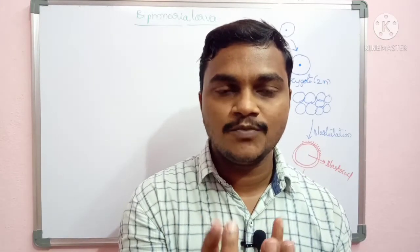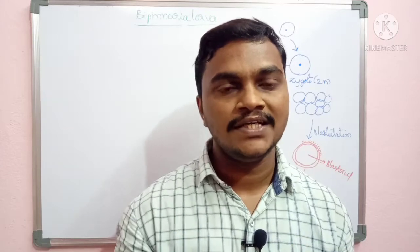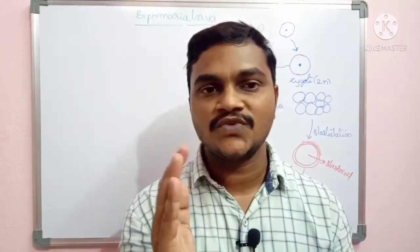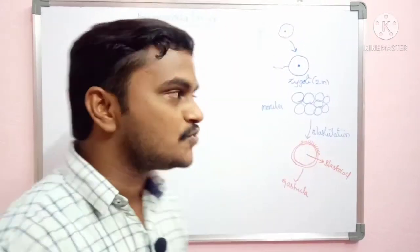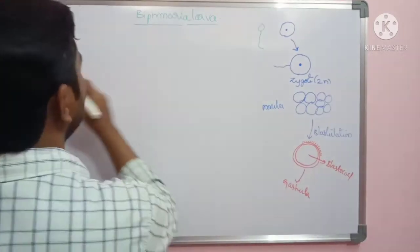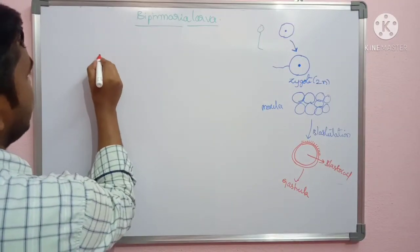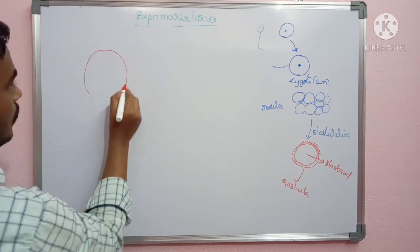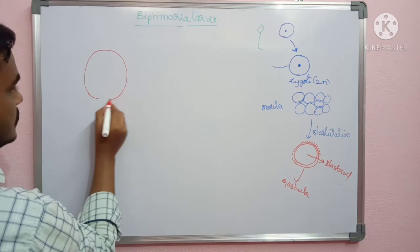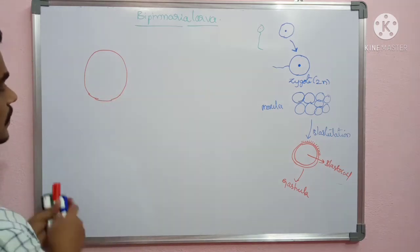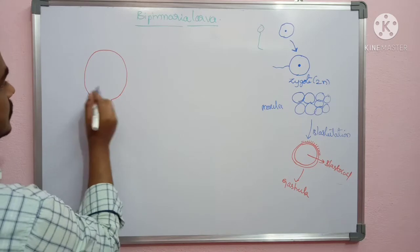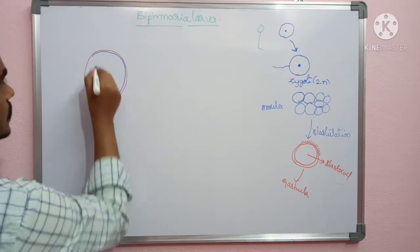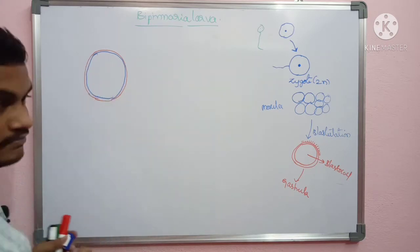If you see the Brachiolaria larva, this is the initial phase of the Brachiolaria larva. The Brachiolaria larva contains two particular ciliated bands. These are ciliated bands present in this region.